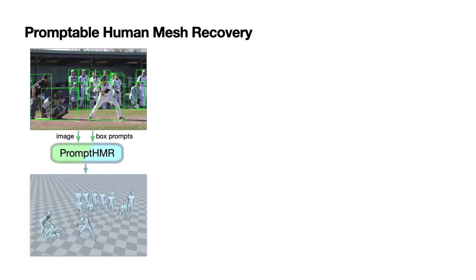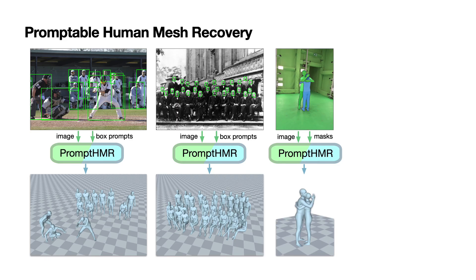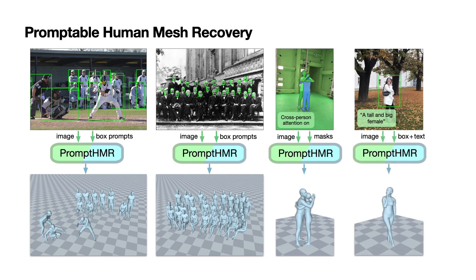We consider four types of prompts. First, the model accepts box prompts which provide human detection. Different kinds of boxes can be used, such as face detection boxes, making the model flexible to work with different detectors. Moreover, our model accepts segmentation masks, which are more useful in close interaction cases. In addition, the model accepts an interaction prompt that can turn on cross-person attention layers to explicitly model person-person interaction. Finally, our model accepts text prompts that provide body shape descriptions to improve shape accuracy.